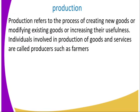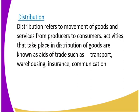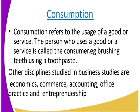Now let us look at production. Production refers to the process of creating new goods or modifying the existing ones and making them useful. For example, when a farmer is producing crops, you are doing the activity — you are planting a seed and harvesting. Then we go to distribution. Distribution refers to the movement of goods and services from the producer to the consumer, including activities like storing in the warehouse, transporting, insurance, and communication. Then we go to consumption. Consumption refers to the usage of goods or services. The person who uses those goods and services is referred to as a consumer.